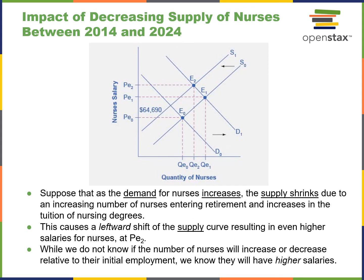This is an example of decreasing supply of nurses between 2014 and 2024. As demand for nurses increases, supply shrinks due to an increasing number of nurses entering retirement and increases in tuition for nursing degrees — certainly a factor in play today. This causes a leftward shift of the supply curve, meaning salaries will go up for nurses entering the field. We don't know if the total number of nurses will increase or decrease, but we know that salaries are going to go up.